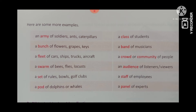A pod of dolphins, fins or whales. A class of students, which is called a crowd or a community. An audience of listeners and viewers. A staff of employees and a panel of experts. So you must read all the collective nouns and memorize them.